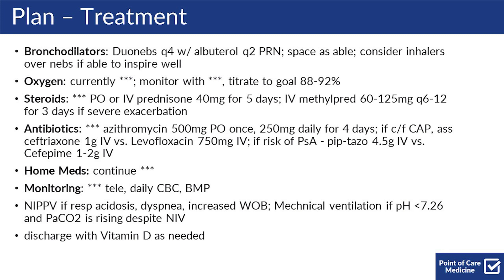You should be continuing the patient's other home medicines, monitoring them daily, and considering telemetry with daily CBCs and BMPs. If the patient has severe respiratory acidosis or increased work of breathing, they should be put on non-invasive positive pressure ventilation. If the patient is still having worsening hypercarbia or acidosis with a pH less than 7.26, they should be considered for mechanical intubation.